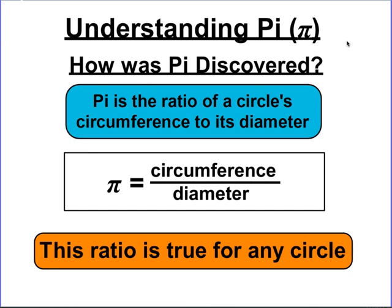So this is true for any circle. So what we can do then is we can use this equation I have on the screen right here, pi equals circumference over diameter, to write other equations to use to find missing measurements for a circle.